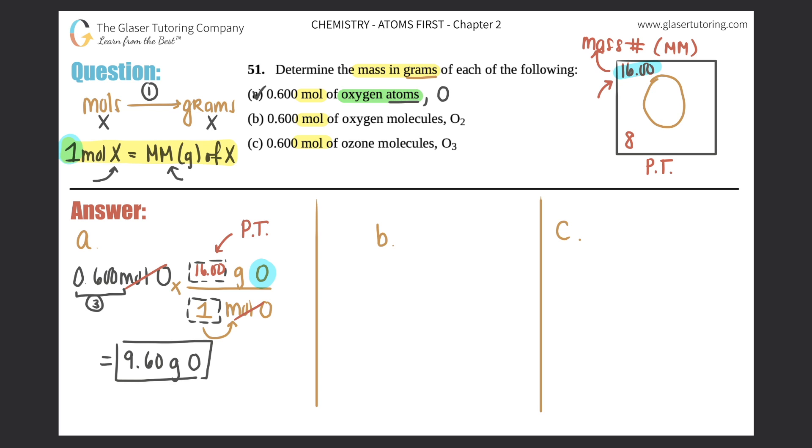For part b: 0.600 moles of oxygen molecules, which is O₂, times by that ratio. Moles of O₂ on the bottom, grams of O₂ on top. What numbers go here? According to that information, one mole of anything is the molar mass on the periodic table. Since you have two oxygens, it's 2 times 16, which is 32. So this would be 32.00. Cross off these units—they cancel. 0.600 times 32 is 19.2 grams of O₂, and we need three sig figs.